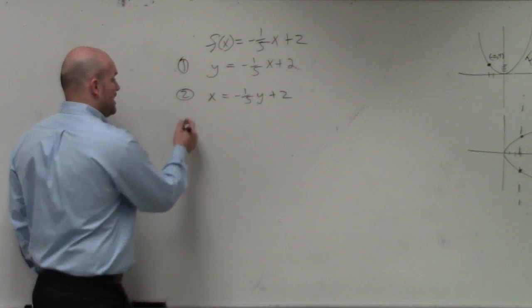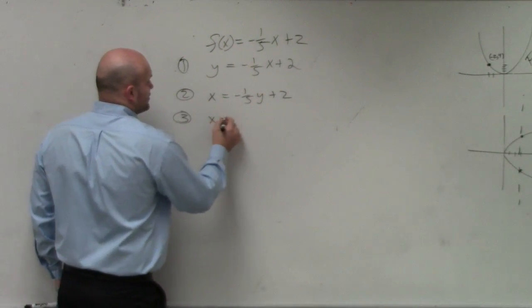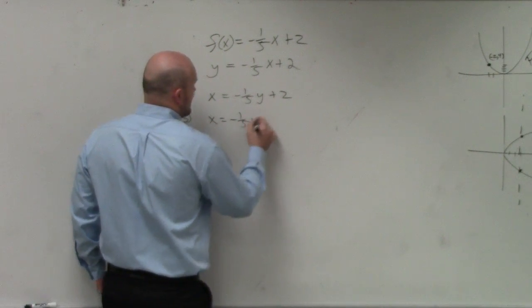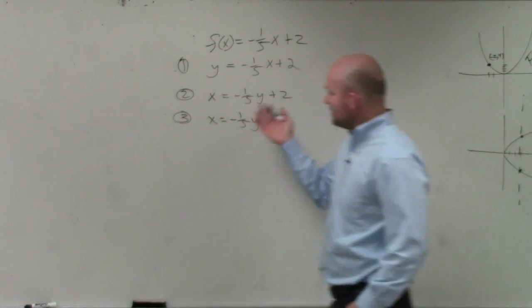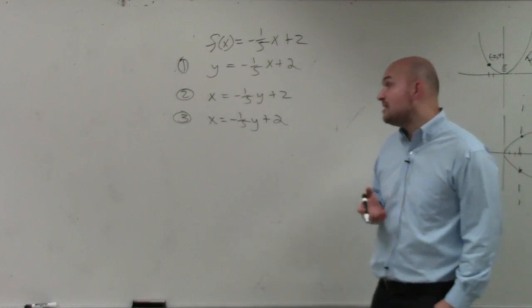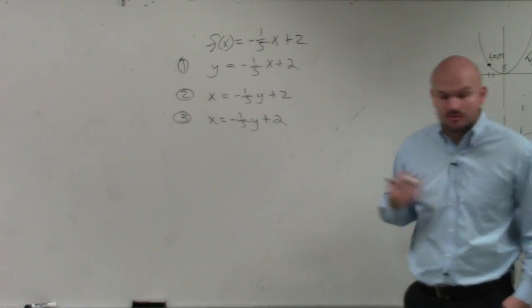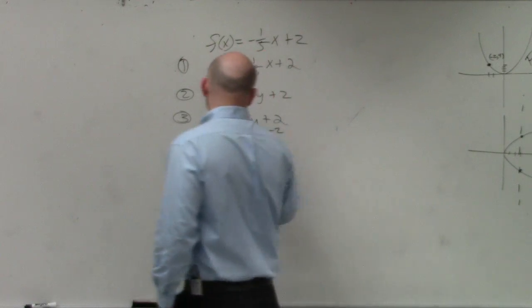Step number three would now be to solve. To solve, you're going to use your inverse operations. Therefore, I look at my y, see my y is being multiplied by negative 1 fifth and it's being added by 2. We always undo addition and subtraction first.